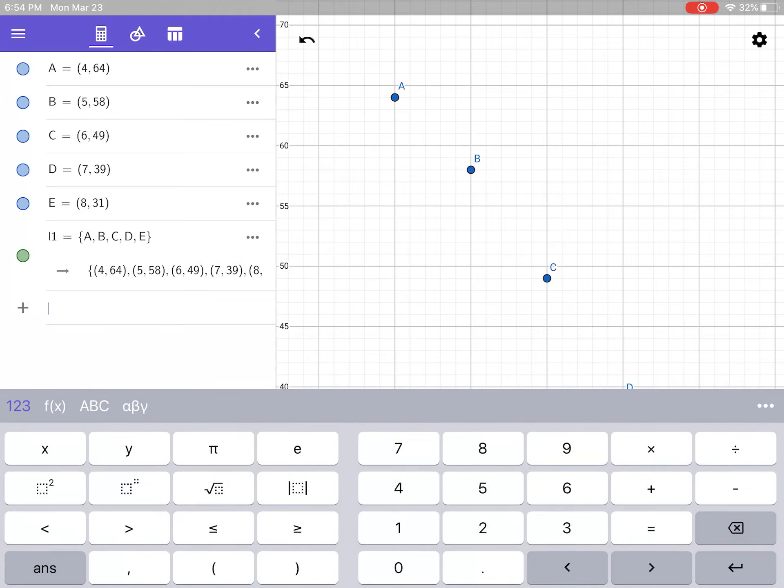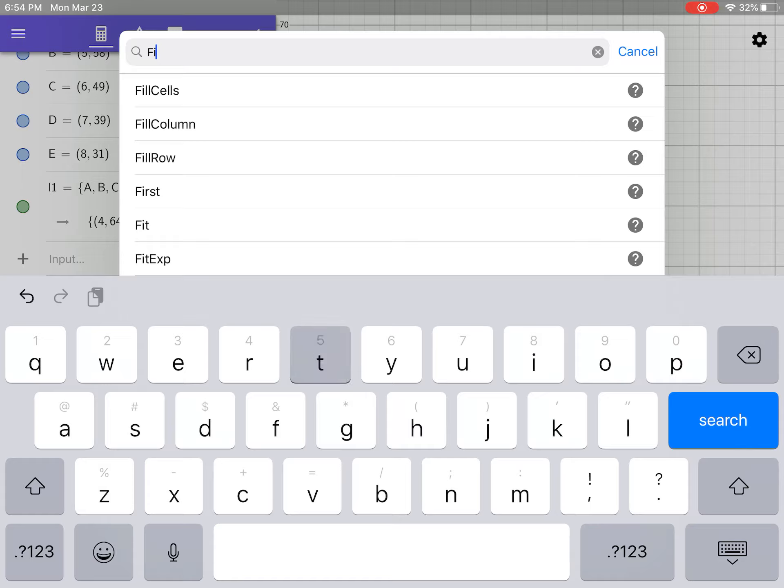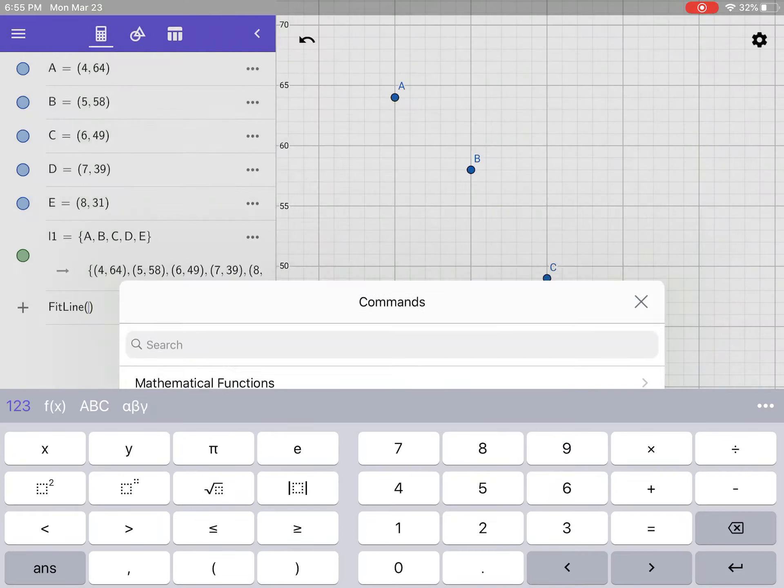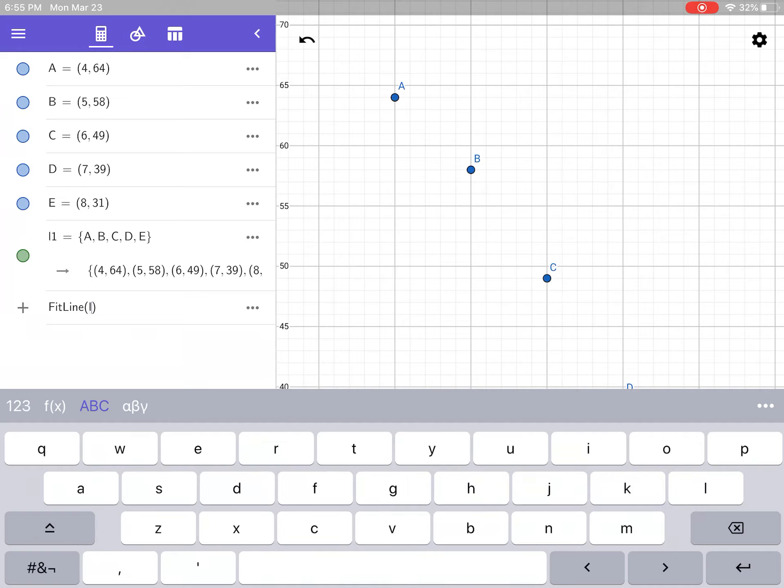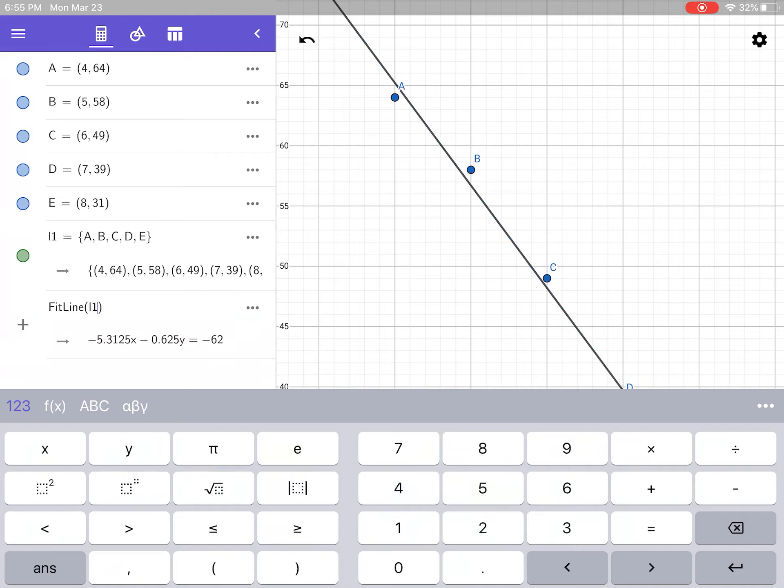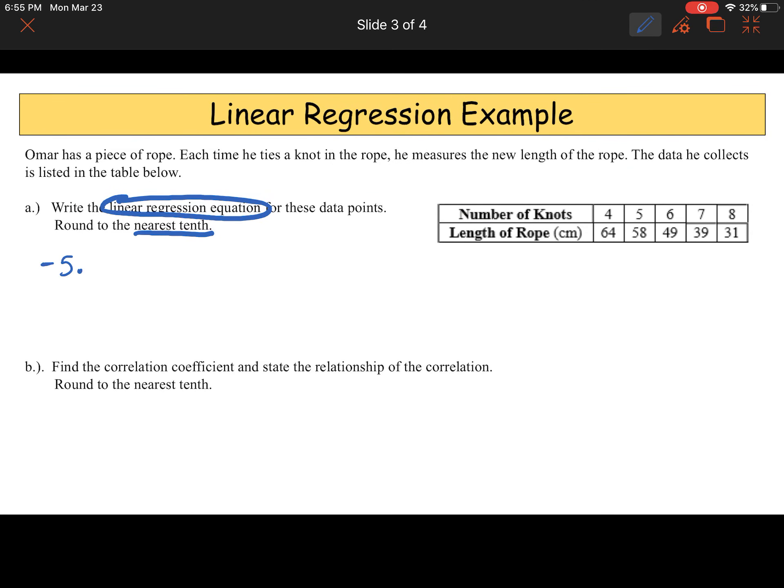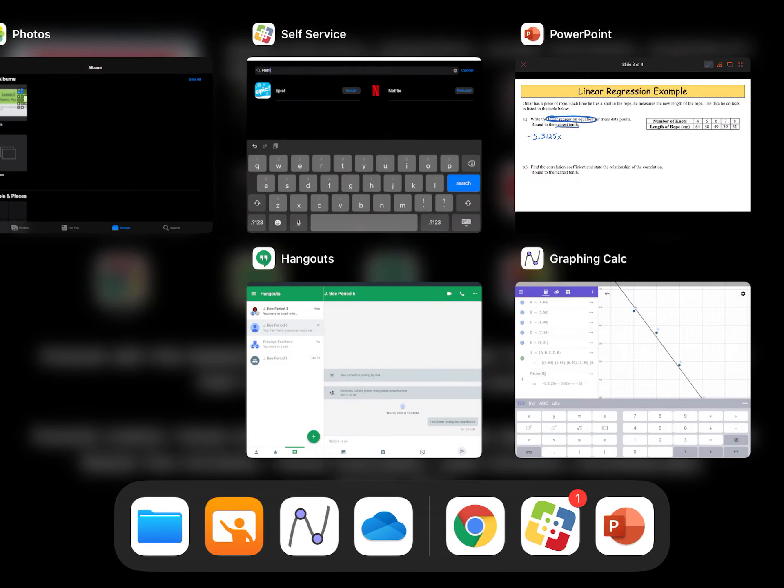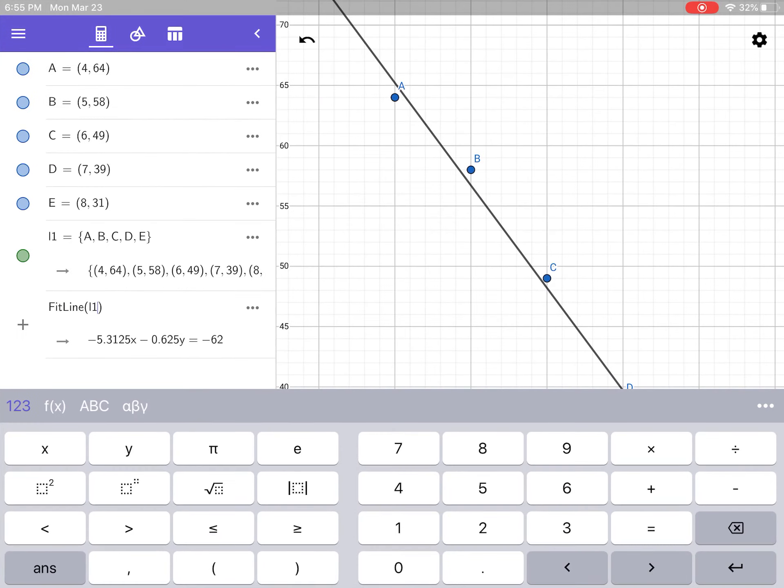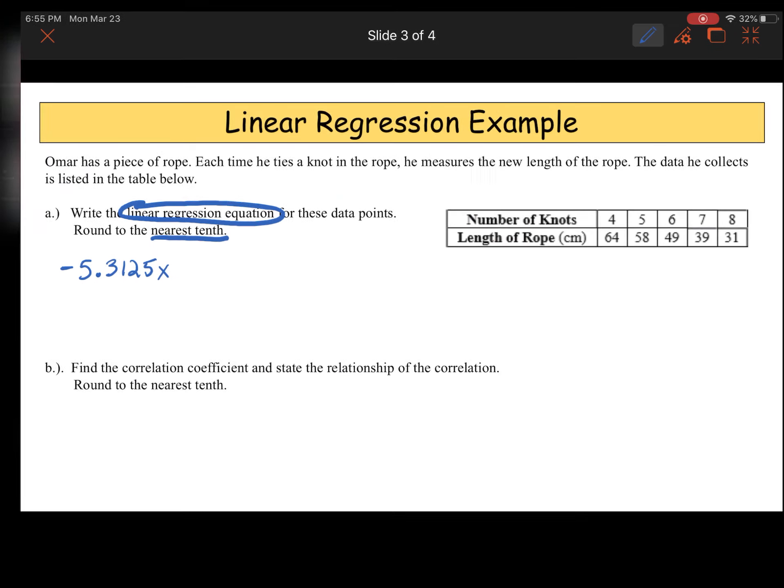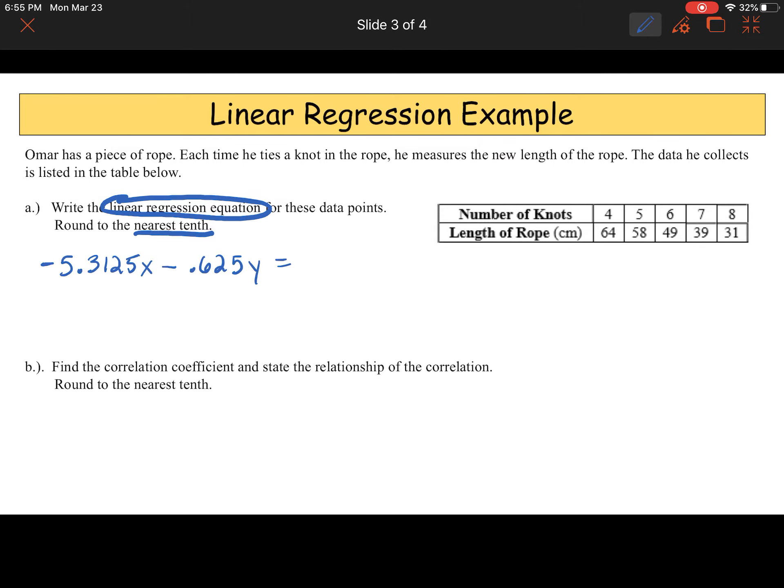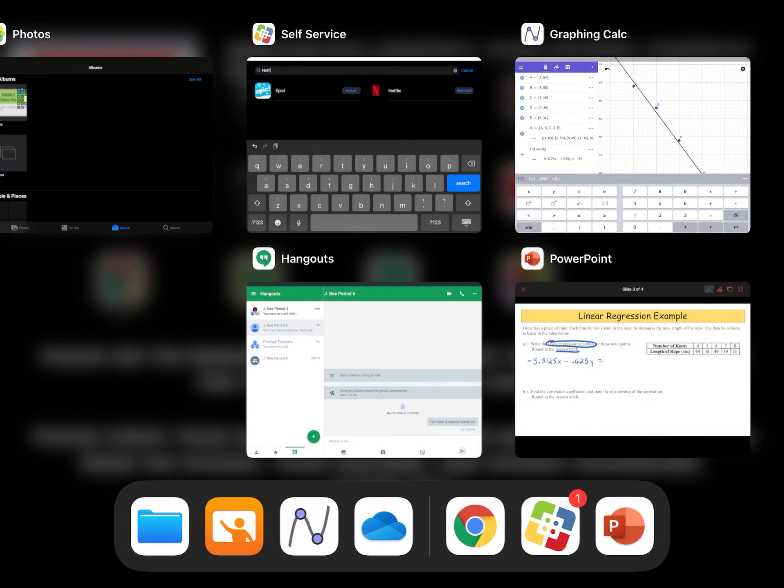List L1 is created, so I'm going to go back to my calculator. I'm going to go down to the next line, and I'm ready for my linear regression. So I'm going to go to dot, dot, dot, and I'm going to type in fit line. That is our GeoGebra command for linear regression, and I'm going to type in L1, because that's the list I'm using. So immediately it gives me my equation. I'm going to write that for my linear regression equation. That's the answer to number one. So I have negative 5.3125x minus .625y equals negative 62.